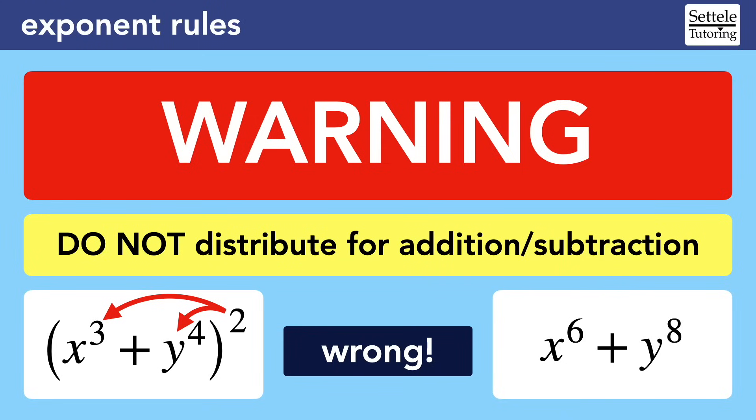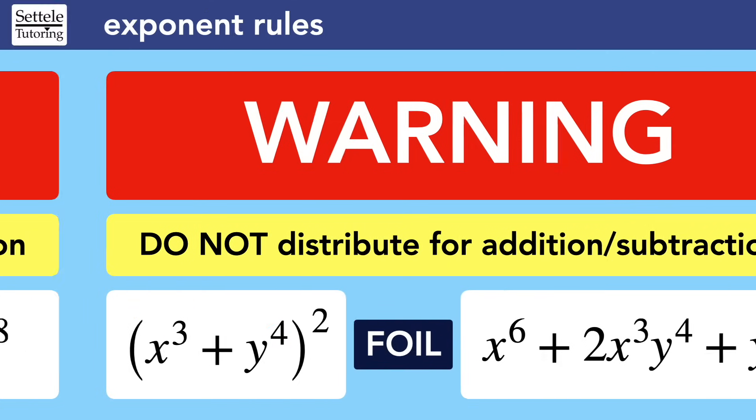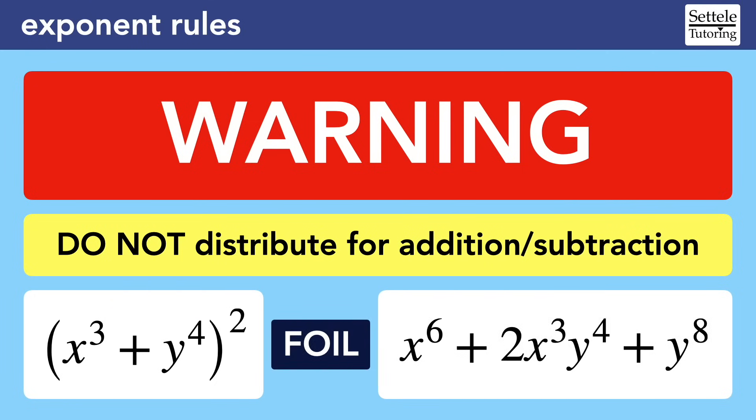But we cannot distribute exponents when the terms are added or subtracted. It's extremely tempting to square both terms, but as we said before, exponents do not mix well with addition and subtraction. If a question involved this kind of expression, the SAT will absolutely make one of the answer choices, x to the sixth plus y to the eighth, but that would be a trap answer. Instead, we have a more complex process for using exponents with addition and subtraction. We need to expand the group, a process we often call foiling. The actual result has an additional middle term that results from the extra multiplication steps.